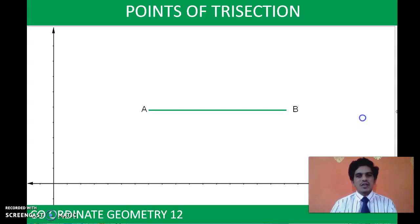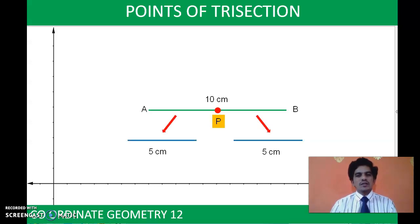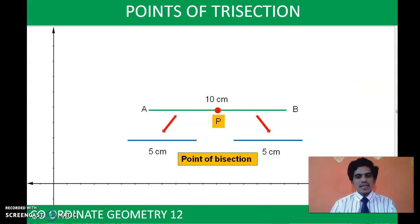Suppose you have a line segment AB whose length is 10 cm. If you want to bisect this, you have to identify its midpoint and cut along it. This divides AB into two equal halves of 5 cm each. Point P is called the point of bisection because it bisected AB. P is the midpoint of AB. We actually derived a formula to find the coordinates of the midpoint. The midpoint is the point of bisection because it divides the line segment into two equal parts.